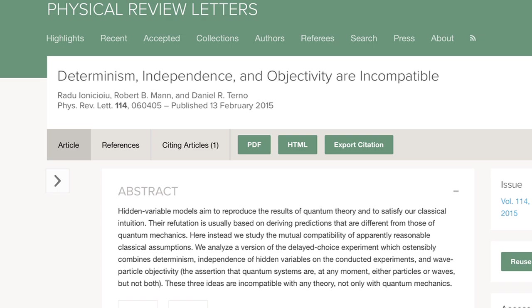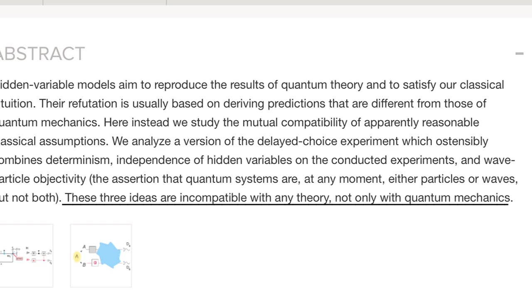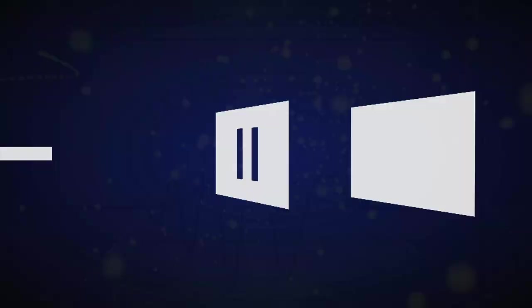This only correlates with the conclusions of this study, which shows objectivity, determinism, and independence, combined, are incompatible with any theory about the universe, and not only with quantum mechanics, but with classical approaches as well. In other words, you can't have a universe that is objective, deterministic, and also independent from observers, as we once thought. All the data has confirmed this through multiple experiments, that reality is dependent on observers.